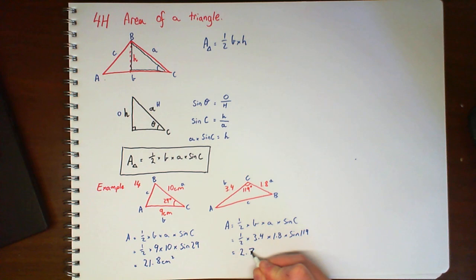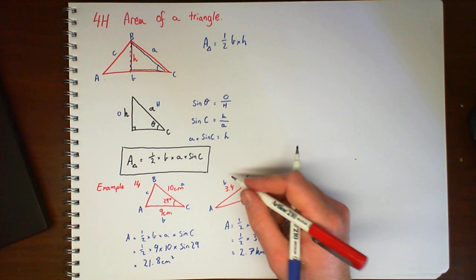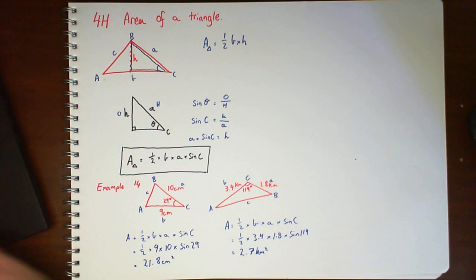Again, if we put that in your calculator, we'll get 2.7 km squared. Oops, that were meant to be km's. You can also use the formula to find a side length.